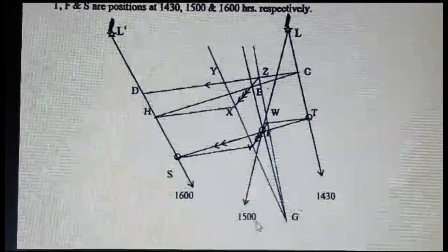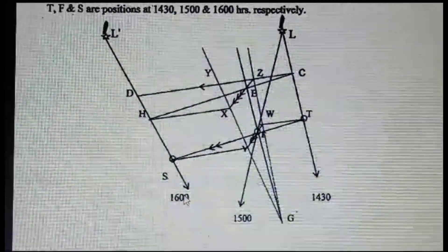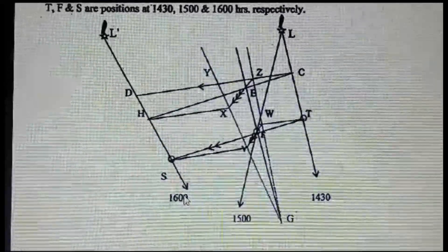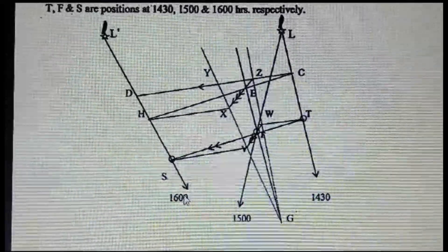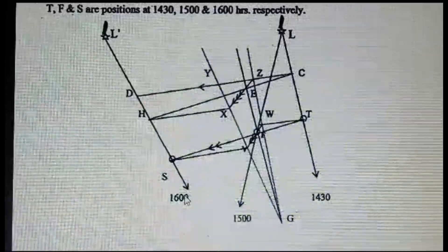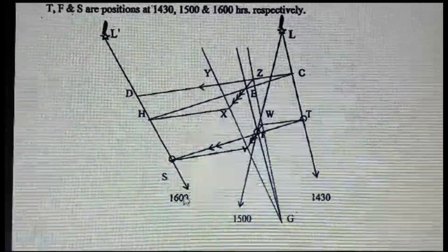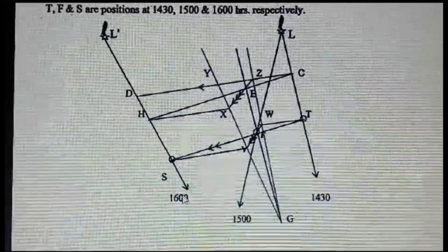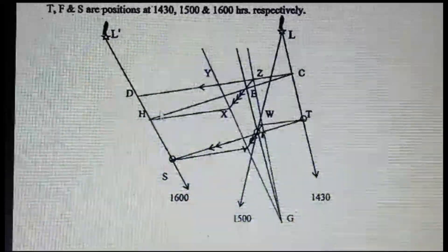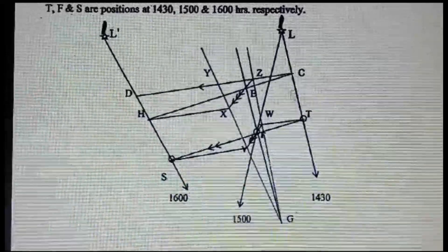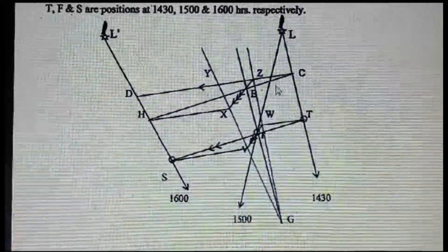And the last bearing is 1600. So now already you know: two bearings will be given, CTS will be given, engine speed will be given, and the direction of the current will be given. Whatever initial information you have, just plot it. So we had plotted the bearings: the first bearing, the second bearing, and the third bearing.